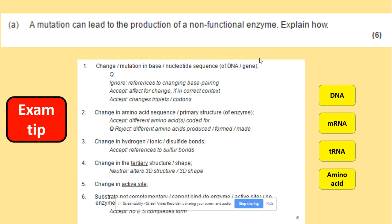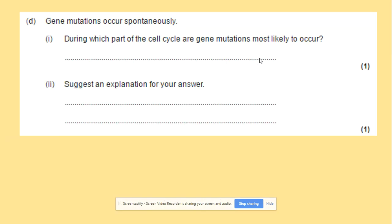The change in bonds — hydrogen bonds, ionic bonds, or disulfide bonds — changes the tertiary structure of the enzyme, which changes the shape of the active site. As a result, enzyme-substrate complexes cannot be formed because the substrate is no longer complementary to the enzyme's active site.